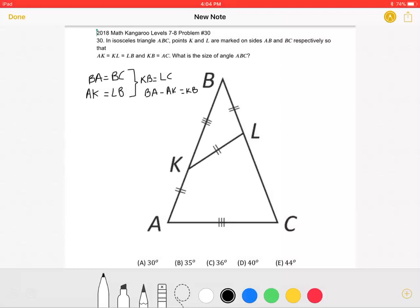In the problem, it states that triangle ABC is isosceles. This means that BA must be equal to BC.